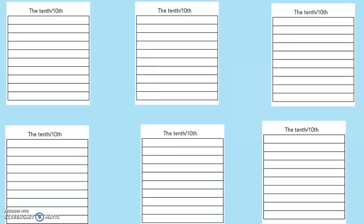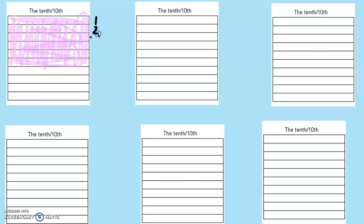We can do some practice with tenths and hundredths. If I highlight a section of the flat — I have one, two, three, four, five, six rods out of ten — so that's six tenths. We write that as a decimal: 0.6. The six goes right behind the decimal point because it's in the tenths place.